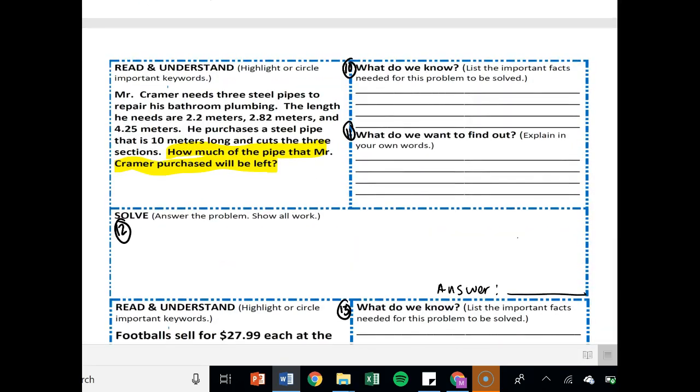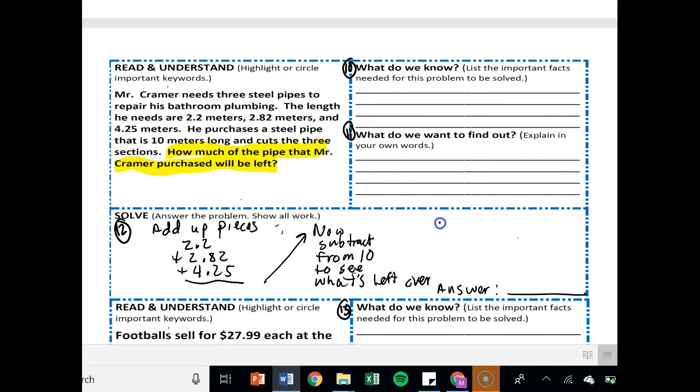Go on to the back side. I'm going to let you do Mr. Kramer's problem there. Make sure you do 10, 11, and 12. I would suggest first adding up the pieces that he's got, because he's got 2.2, 2.82, and 4.25 pieces of pipe there. So if I were you, I'd add up the pieces of pipe, and that's going to give you the total amount of pipe that he wants to cut off. And then you're going to want to find now subtract from 10, because to see what's left over. And I would do that subtraction maybe over there. So you want to find a total and then do 10 minus whatever that total was to get your answer.